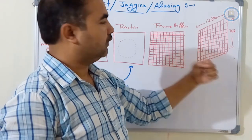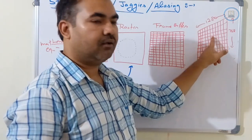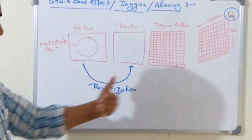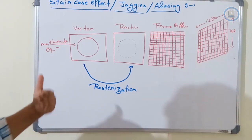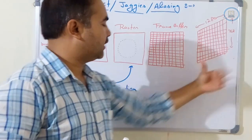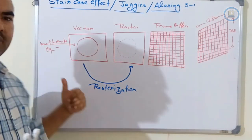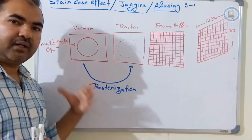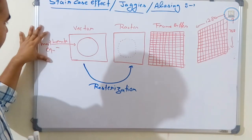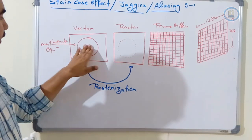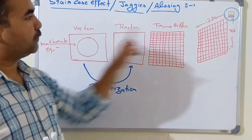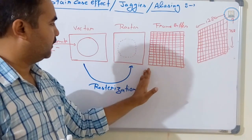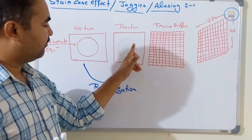To display an image, we glow the targeted pixels on the screen. Everything in computer graphics is actually composed of different mathematical equations or graphics primitives, which generate vector images. We cannot directly display a vector image on a raster display device, so we need to convert the vector image into raster format — that is, into pixel values.